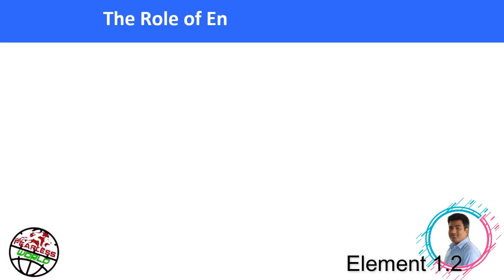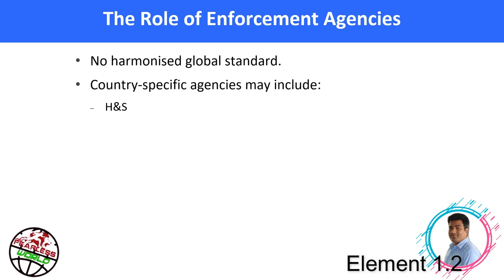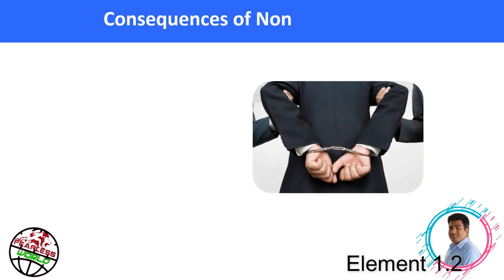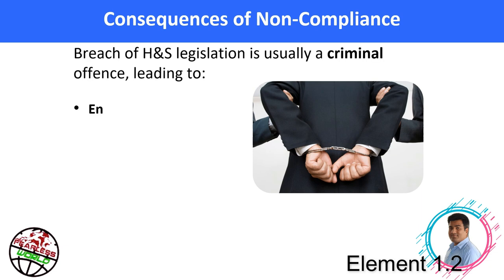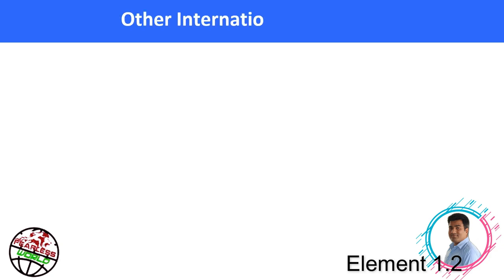What is the role of enforcement agencies in health and safety? There is no harmonized global standard for health and safety. Country-specific agencies may include the health and safety enforcement agency, fire authority, insurance companies, and police, who may be involved in enforcing health and safety law in some countries. Consequences of non-compliance or breach of health and safety legislation include prosecution: organizations may be fined, and individuals may be fined or imprisoned.